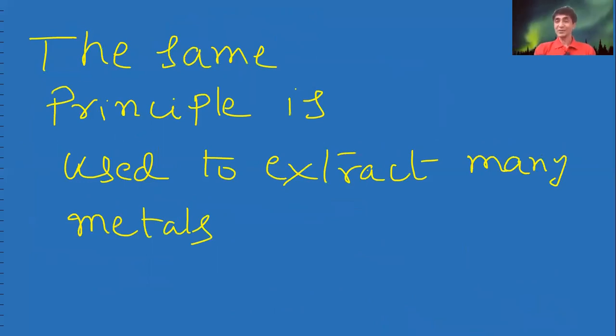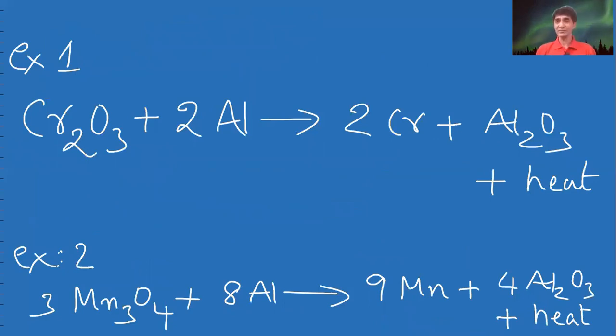Please remember that aluminum is a good reducing agent in the thermite process. The same principle is used to extract many metals like Cr2O3. You can get chromium with the help of aluminum.